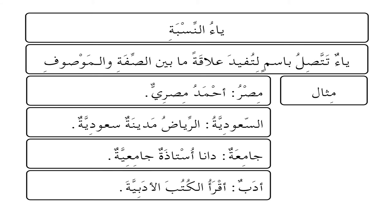Another example: السعودية — الرياض مدينة سعودية. We took the name of the country and eliminated a few things from it because it became an adjective. It no longer has the الـ because it is describing مدينة which is indefinite, and it must agree with it. Notice that the ياء is still there. The sentence means: Riyadh is a Saudi city.